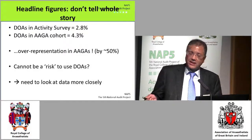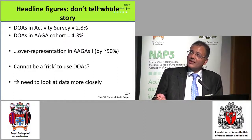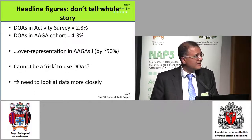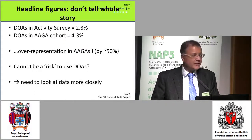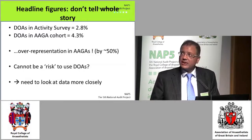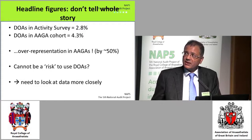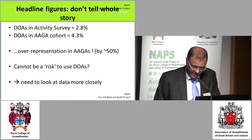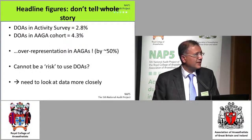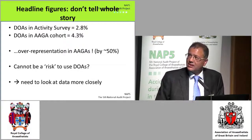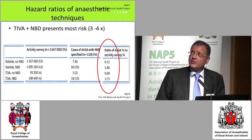The headline finding was that we found a higher incidence of monitoring use in the AAGA cohort — the certain and probable cases — which would superficially cause us to regard monitoring as a risk factor. But it can't surely be a risk. This paradox has to be explained; it doesn't make logical sense. So the purpose is to look at the data more closely.